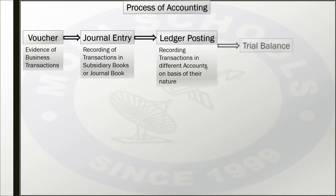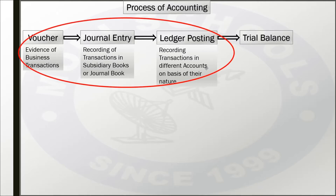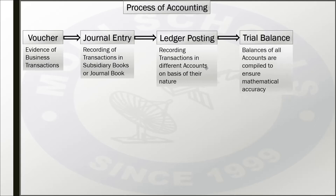After journal entry and ledger posting, we prepare the trial balance. The trial balance is a statement that checks whether all the steps followed — journal entry and ledger posting — are mathematically correct. In the trial balance, we note down all account names and whether they have a debit or credit balance. If the trial balance matches, we know everything has been prepared correctly.